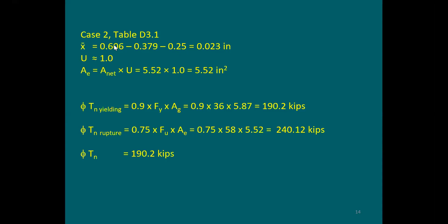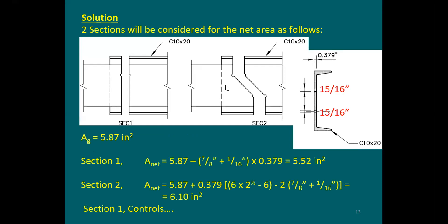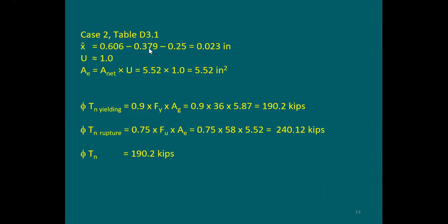You subtract the eccentricities, the web thickness, and also one half of the plate thickness. The reason is that the plate is placed in front of the channel — on the right side. This is why x-bar is going to be very small, and the U factor for the amount of eccentricity is going to be also small. This is why the U factor can be equal to 1.0, so there is no real reduction because of the eccentricity.